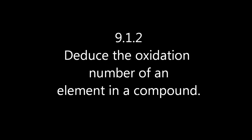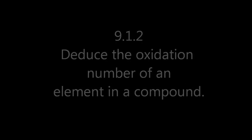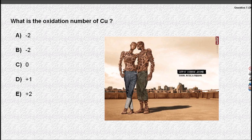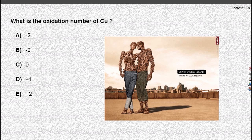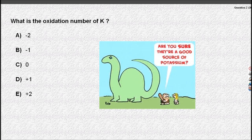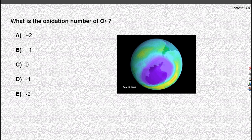Assigning oxidation numbers. All elements have an oxidation number of zero. Copper's an element, so the oxidation number must be zero. Potassium's an element, oxidation number of zero. O₃ is ozone, but it's still an element, and so that's zero as well.